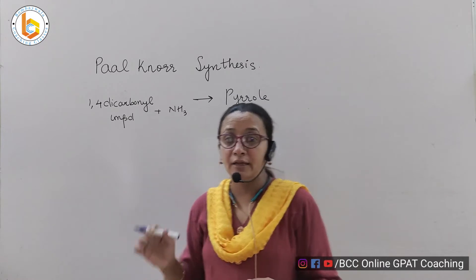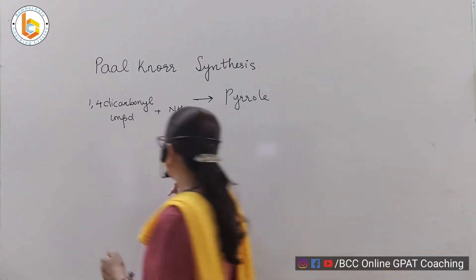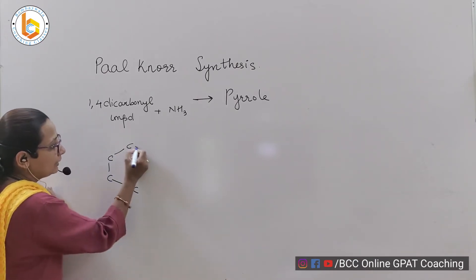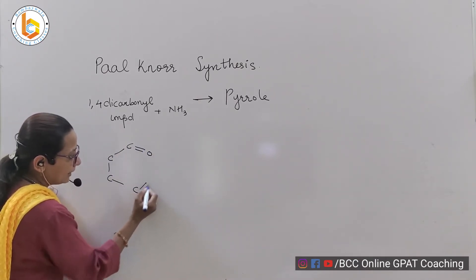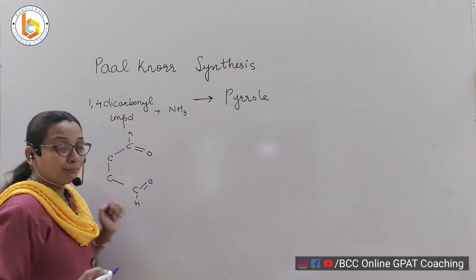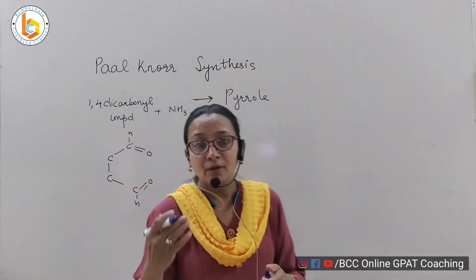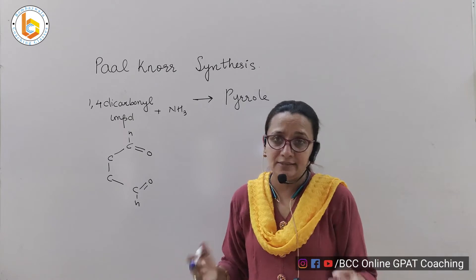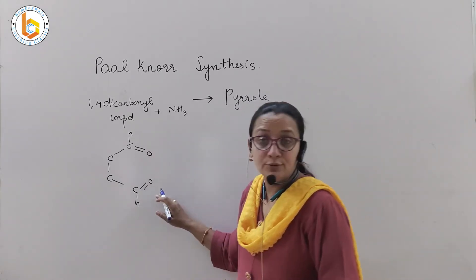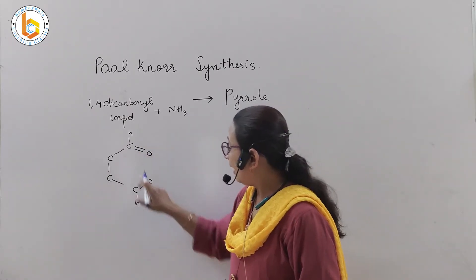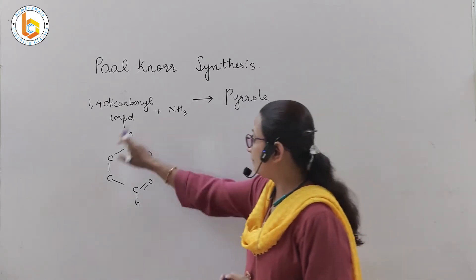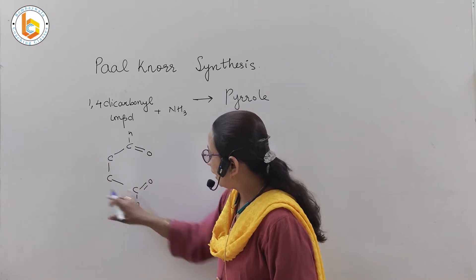What can be a 1,4-dicarbonyl compound? It can be a 1,4-dicarbonyl aldehyde, or it can be a ketone, or it can be a carboxylic acid. To make it simplest, I am using a 1,4-dicarbonyl compound — nothing but a dialdehyde, also called succinyl dialdehyde. This is the same compound: carbon number 1 and carbon number 4.